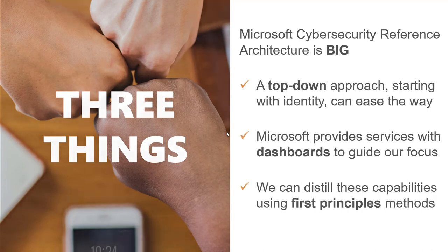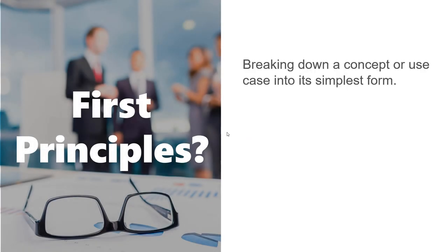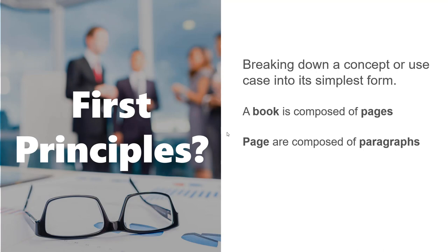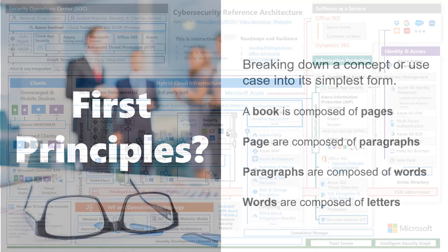What are first principles methods? It's a way to take a big topic and break it down into its simplest form. For example: a book is composed of pages, pages are composed of paragraphs, paragraphs break down into words, and words into letters. You're deconstructing the topic and then putting it back together having broken it down into its simplest form.